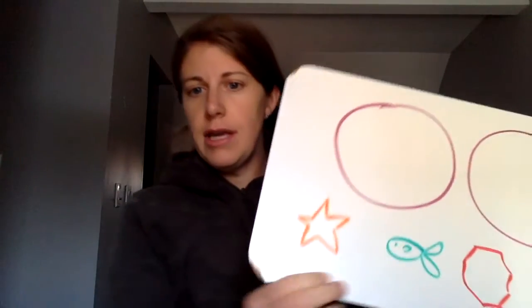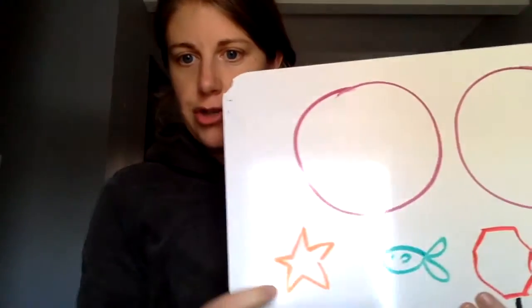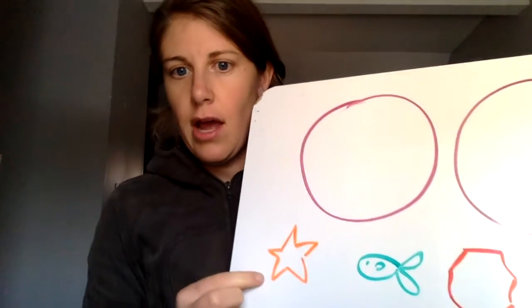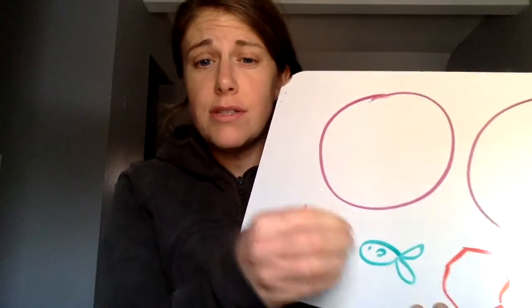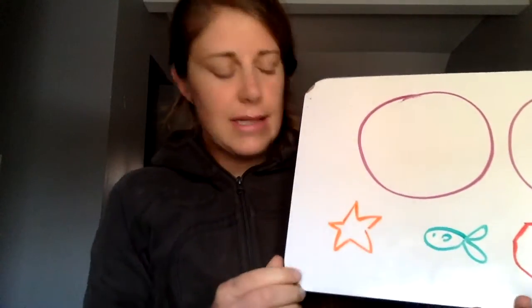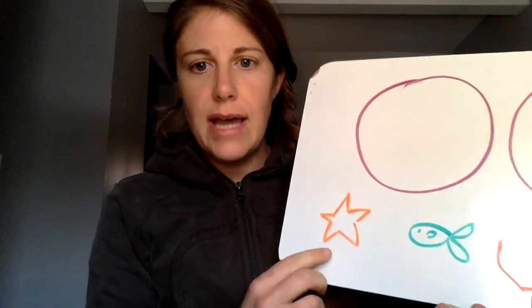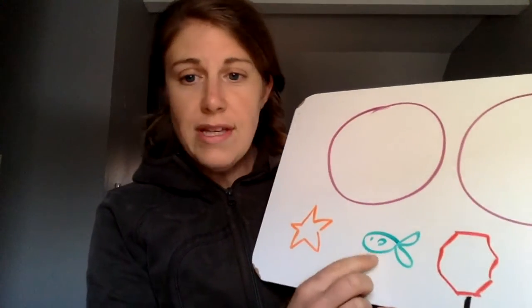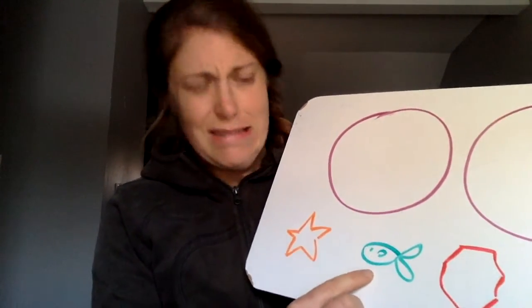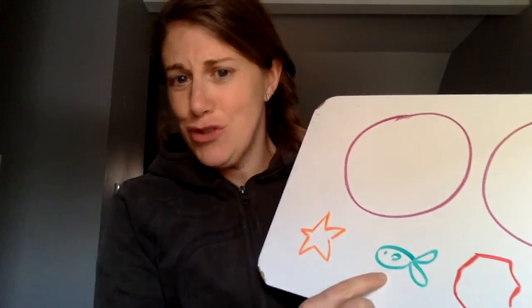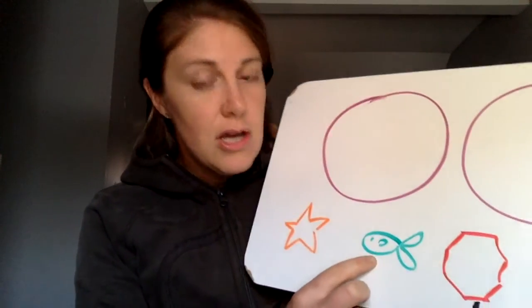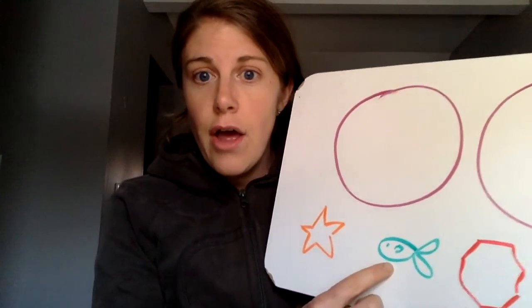Another example of a word that I could stretch out — here I have a picture of a star. So if I wanted to stretch out the beginning sound, I would say star. Or this here is a fish. It's not the best fish in the world, but it's a fish. So I would stretch that out by saying fish.